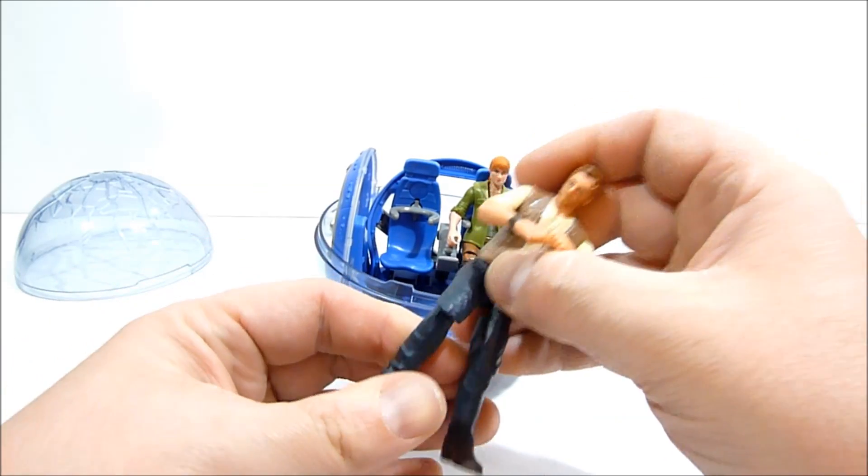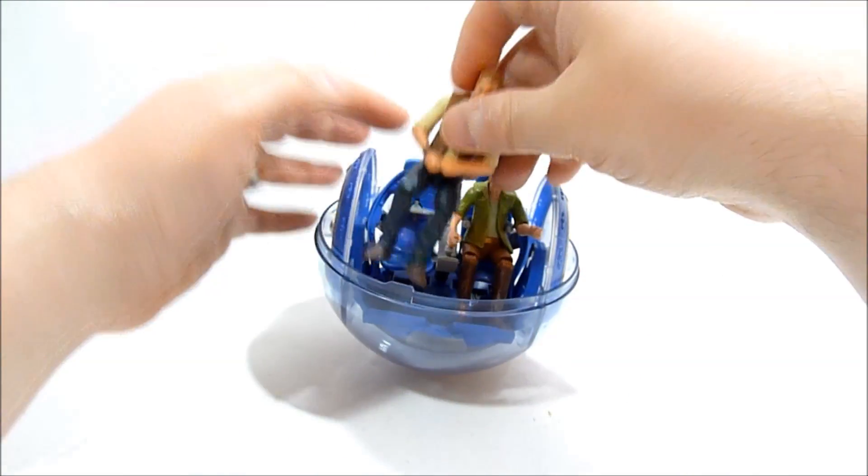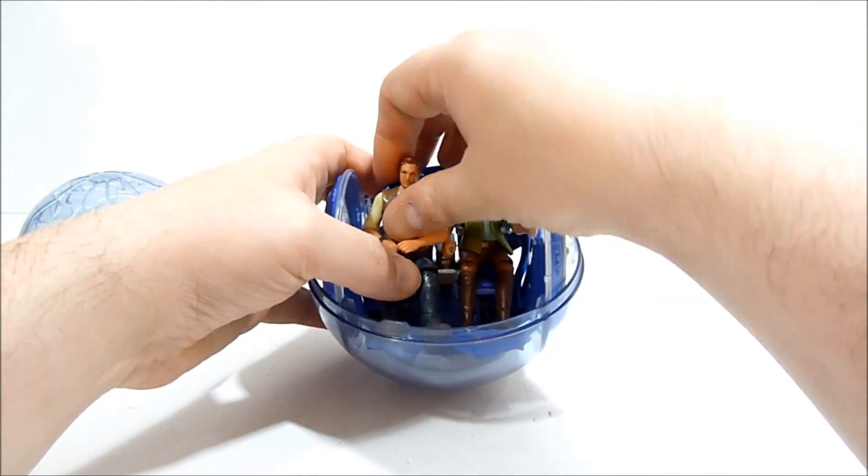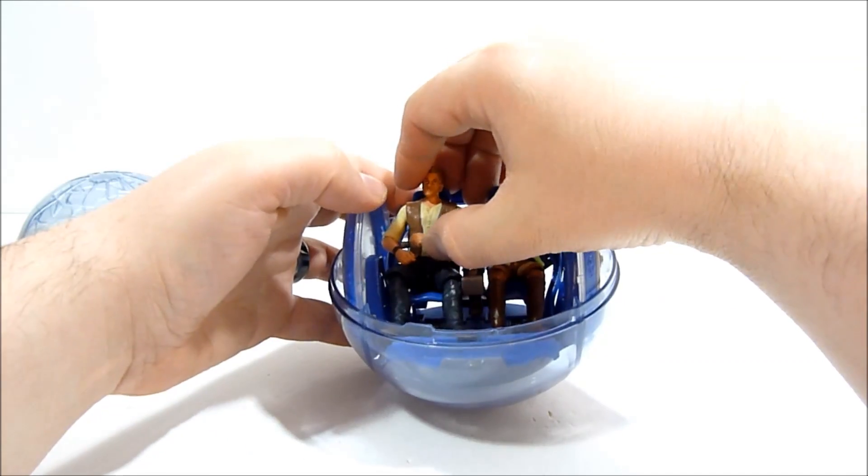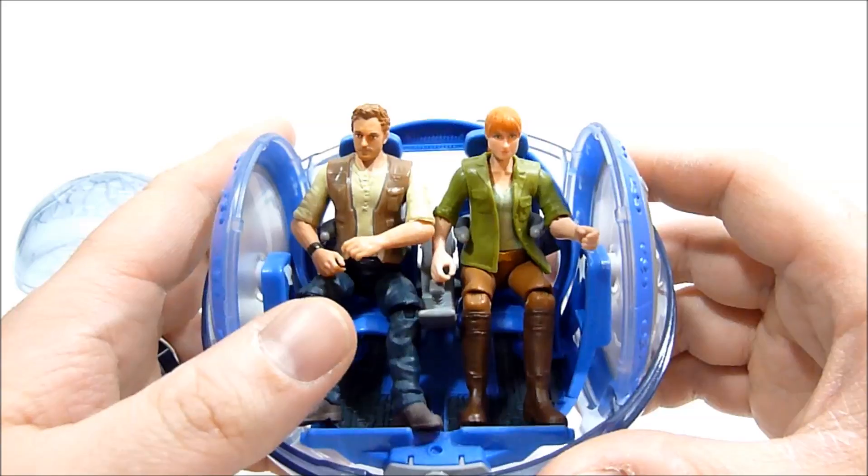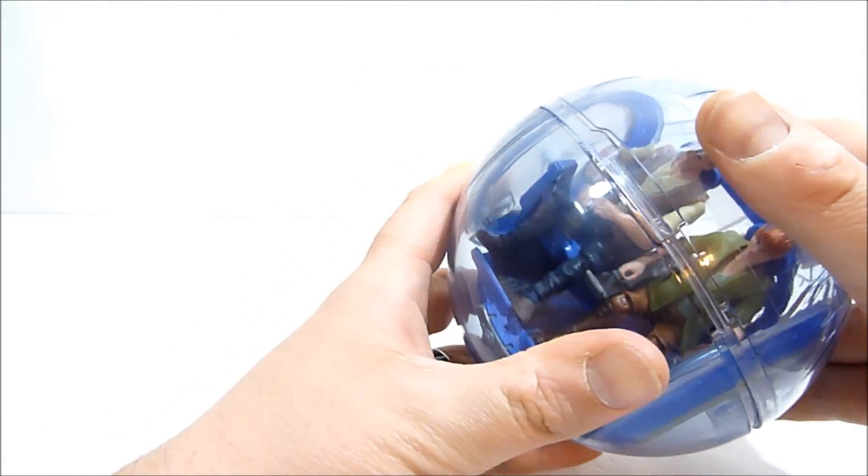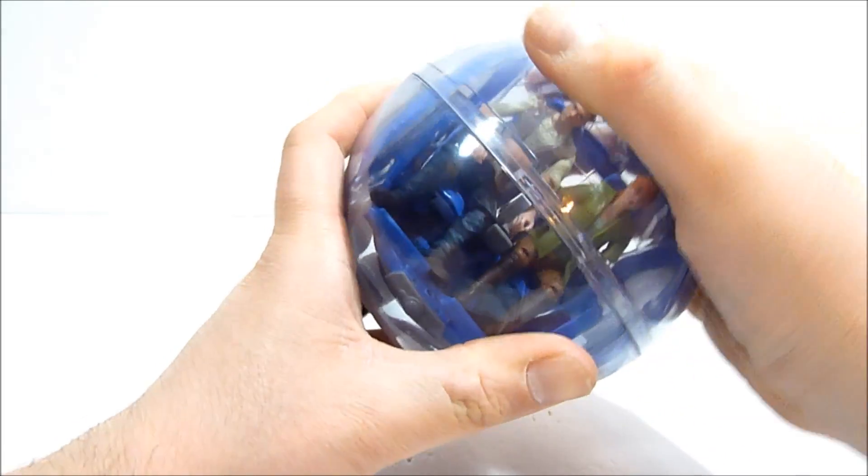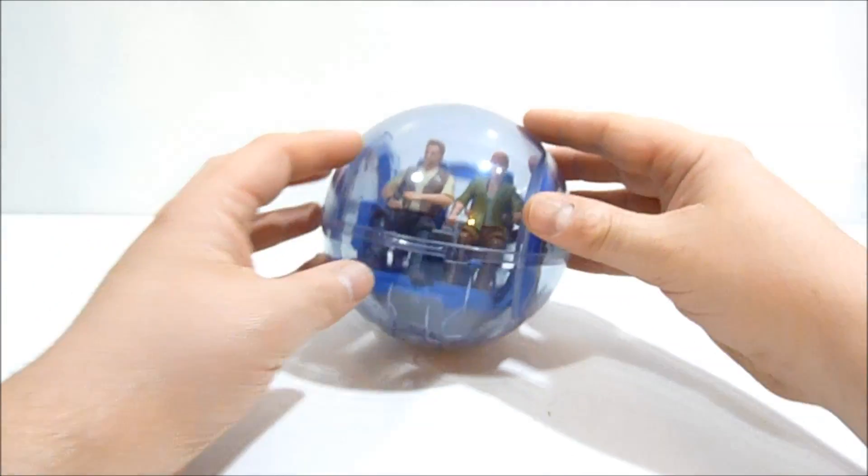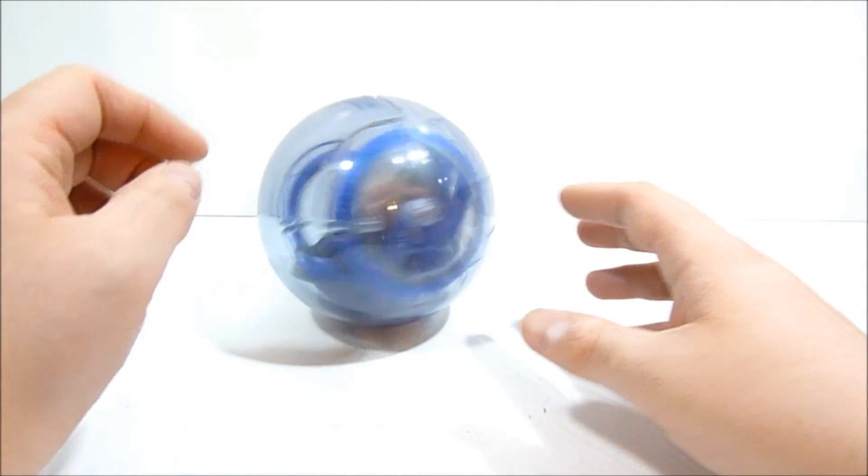So it is a little bit off balance with just the one figure, but luckily I have Owen. So let's go ahead and get this guy in here as well. Get his arm up out of the way so he doesn't bother Claire while she's trying to drive. And everybody fits very nicely. You can see. Comfy, comfy. Now we just go ahead and put the top back on and just lock it in place. And now you have Claire and Owen in the gyrosphere.